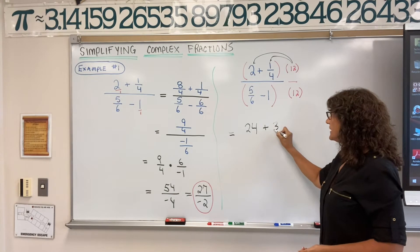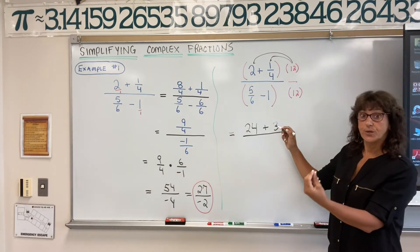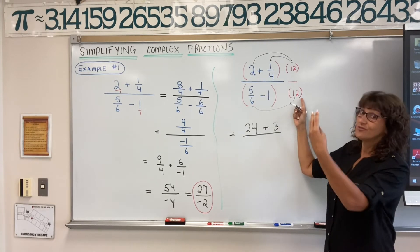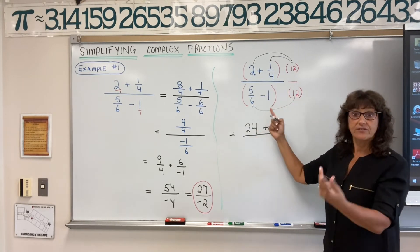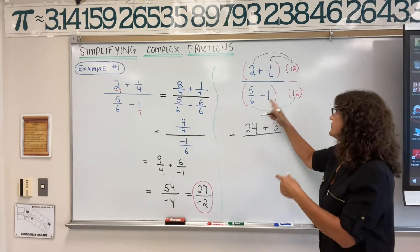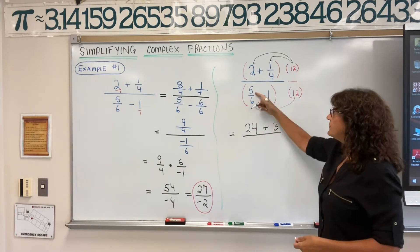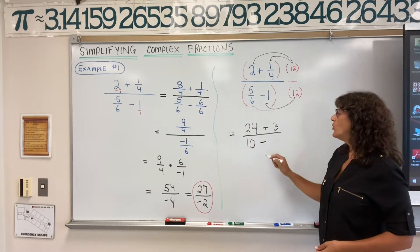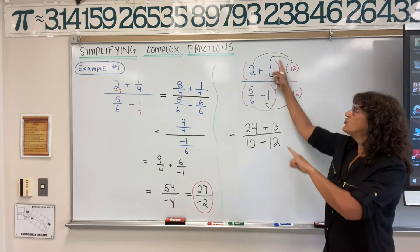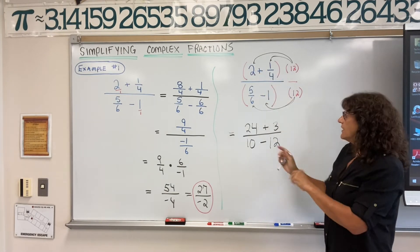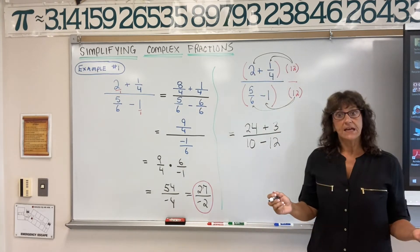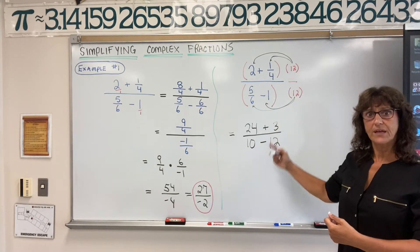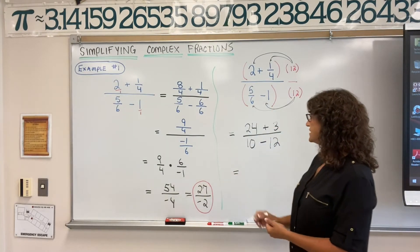Distribute the twelve: twelve times two is twenty-four; twelve times one-fourth — twelve divided by four is three. In the denominator, distribute the twelve: five over six times twelve is sixty over six which is ten; twelve times one is twelve. And notice what happened — it's not a complex fraction anymore. All the fractions disappeared in one step.